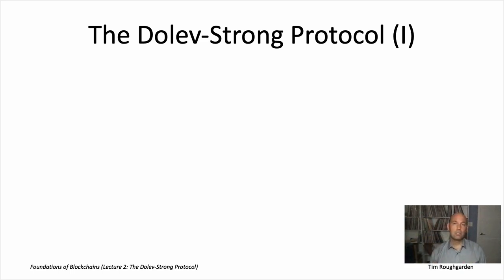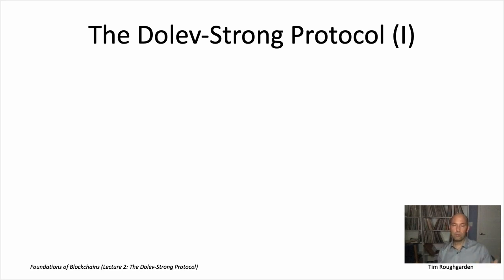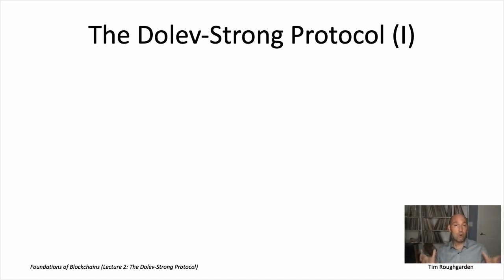A general solution to Byzantine broadcast under our standing assumptions: a permissioned setting with a known set of nodes, PKI so nodes have public keys that are common knowledge, and the synchronous model where nodes have a global shared clock and messages sent in one time step arrive at the beginning of the next. This protocol is called the Dolev-Strong Protocol, after its inventors back in 1983, and we will see it satisfies both validity and agreement under these assumptions.